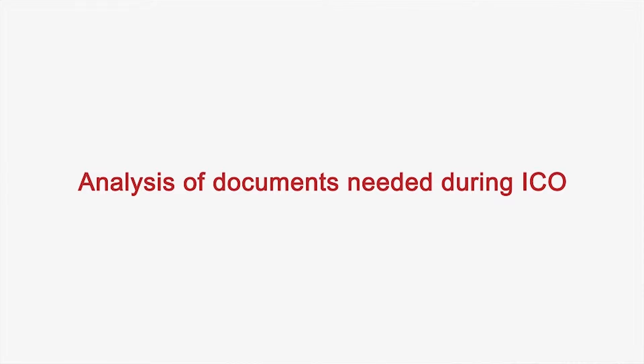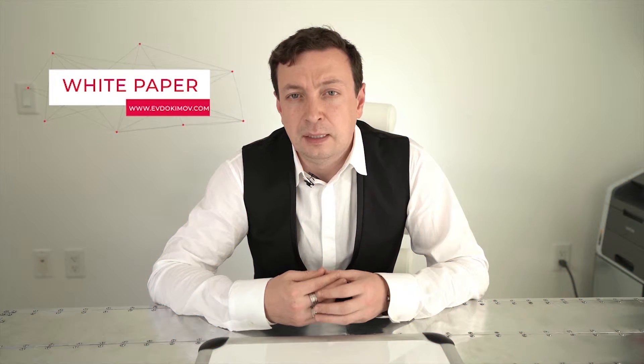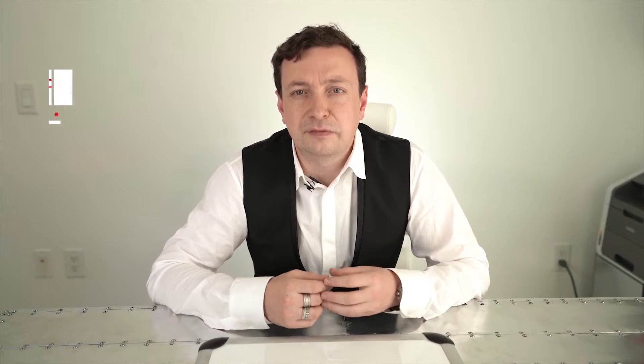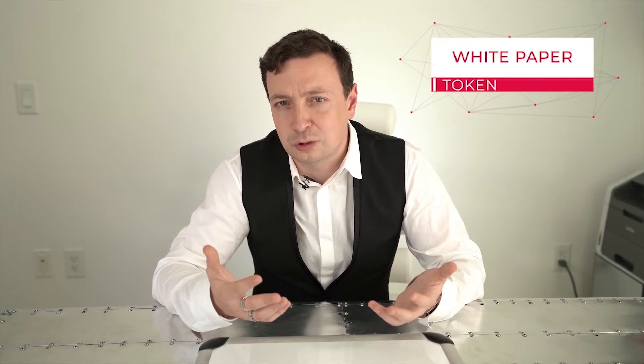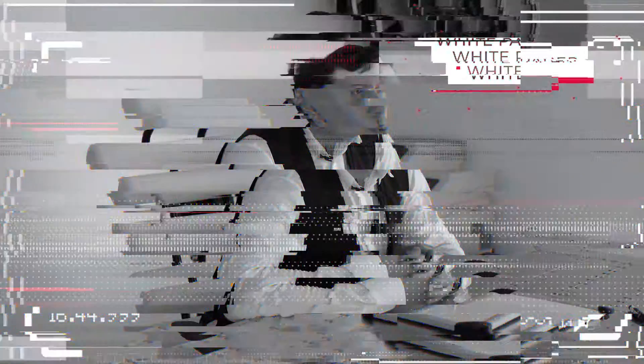What documents will we be looking at? The white paper must include three important components. The first component is the token itself, which is the main object of interest to investors. The second component that must be included in the white paper is the business description, which is the relationship between the business and the market.